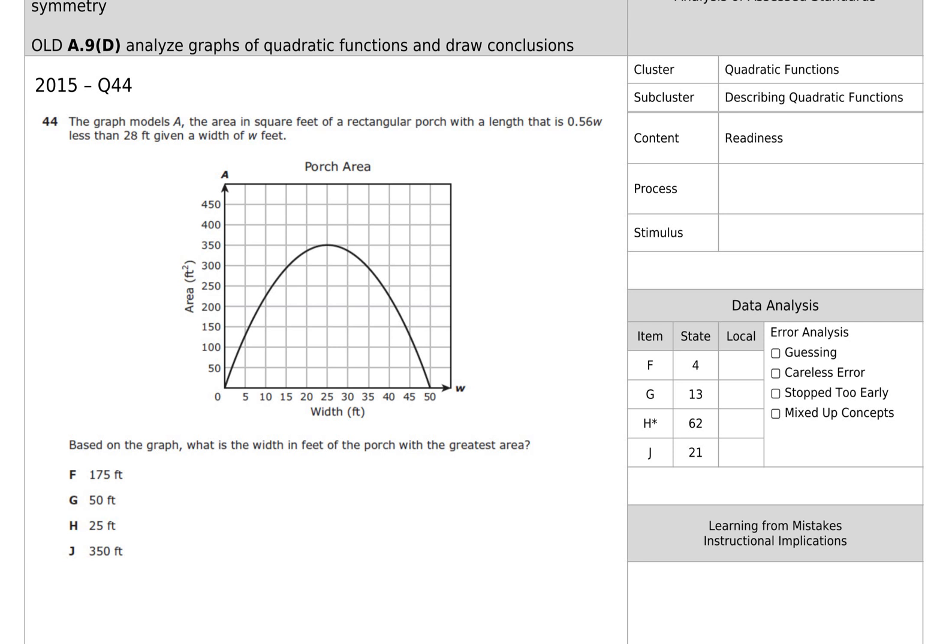The graph models A, the area in square feet, we see that here, of the rectangular porch that has length and more. So it's talking about lengths on this side. Based on this, which width of the porch gives us the greatest area? What is the width in feet of the porch that gives the greatest area? Well, where is the greatest area? This right here would be the greatest area. It's not asking for the greatest area, but the width that gives us that greatest area right there. So that width is 25. The answer is H.